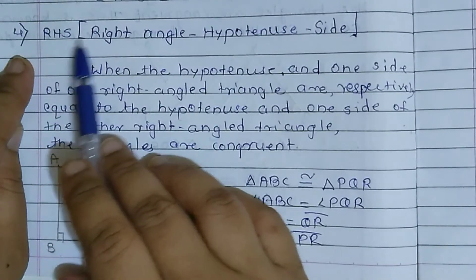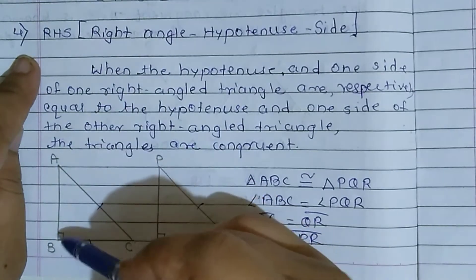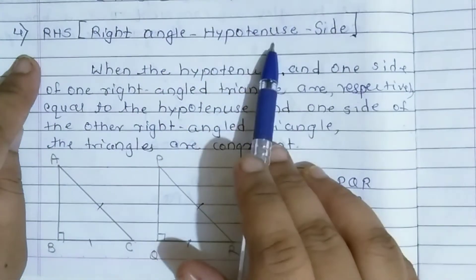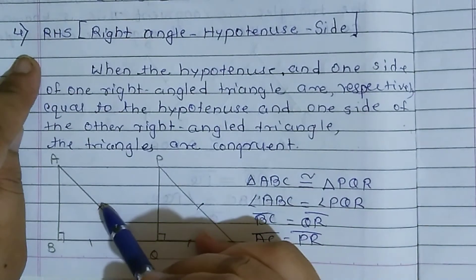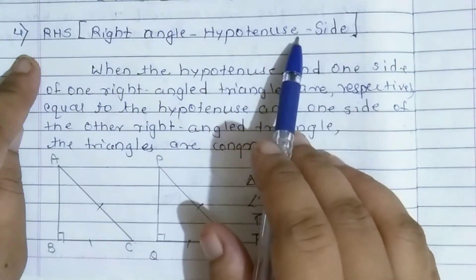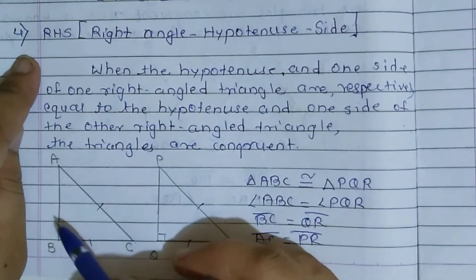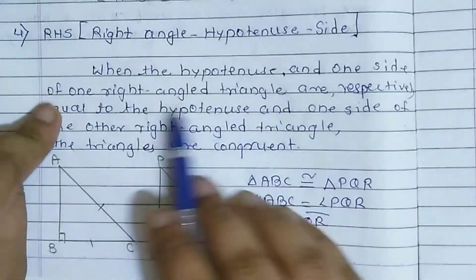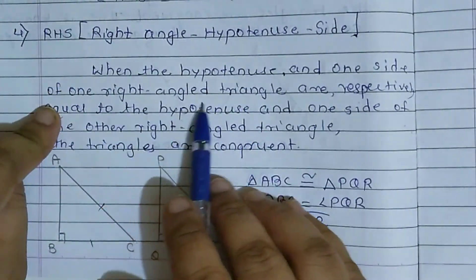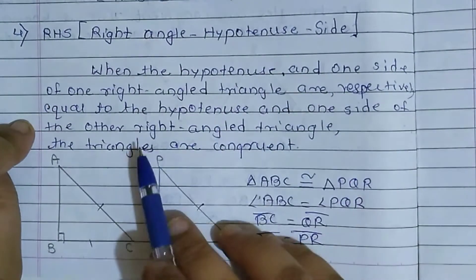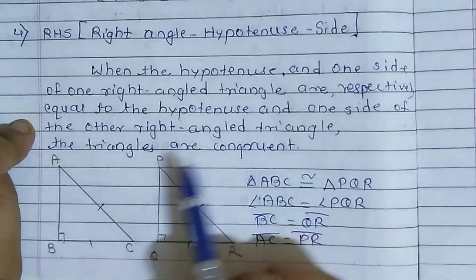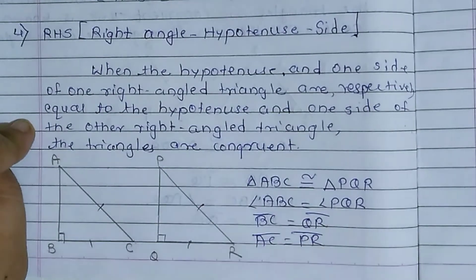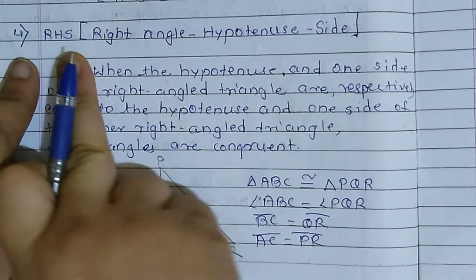Next is RHS — R for right angle, H for hypotenuse (the side opposite to the right angle), and S for side. When the hypotenuse and one side of one right-angle triangle are respectively equal to the hypotenuse and one side of the other right-angle triangle, the triangles are congruent.